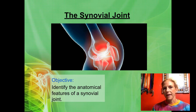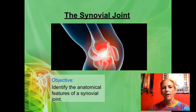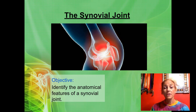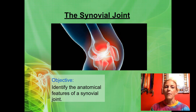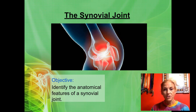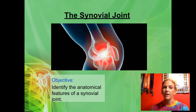In our last mini lecture we were talking about classifying joints. We classified them according to their structure — they were either fibrous, cartilaginous, or synovial — and we talked about classifying them according to their function: they were either synarthrotic, amphiarthrotic, or diarthrotic.